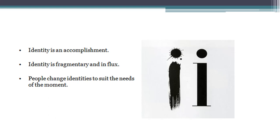Identity is an accomplishment. Kyunke identity determine kerti hai ke hamare personality kitni stable hai, kitni developed hai? Identity is also fragmentary and in flux. Fragmentary ka matlab hai something that is unstable, and influx ka matlab hai ke ye constantly change ho rahi hai. Because identity is something that is constantly evolving, that is changing. Jaisi jaisi hum society mein interact kerti hain, hamare interactions change hote hain, context change hote hain, usi hisaab se hamare identity mein bhi change ho. People change identities to suit the needs of the moment — ek society mein khud ki jagah banane ke liye, compete karne ke liye, people have to adapt and change their identities.